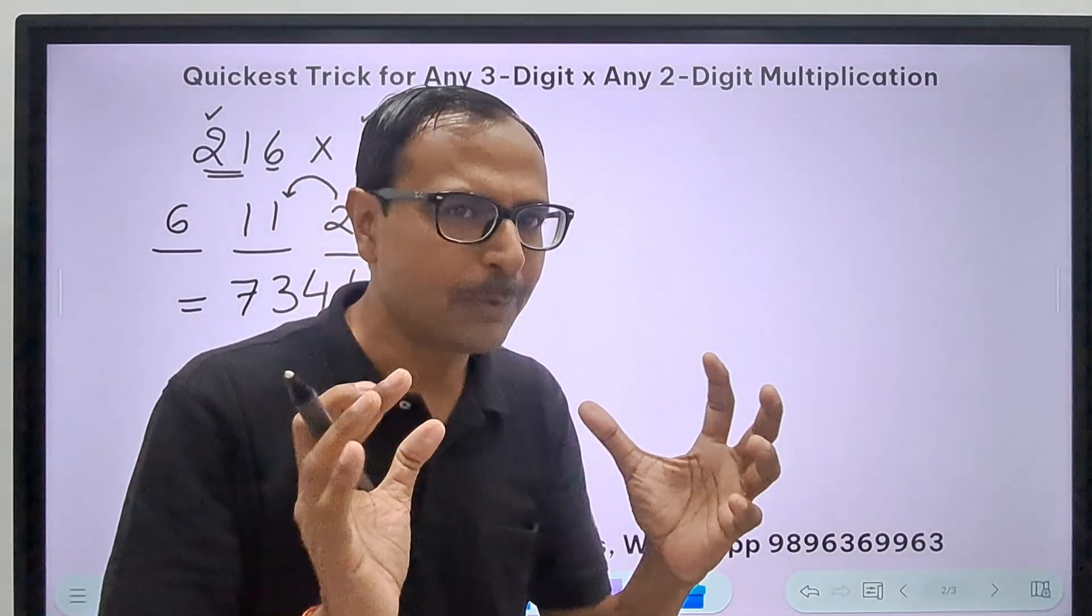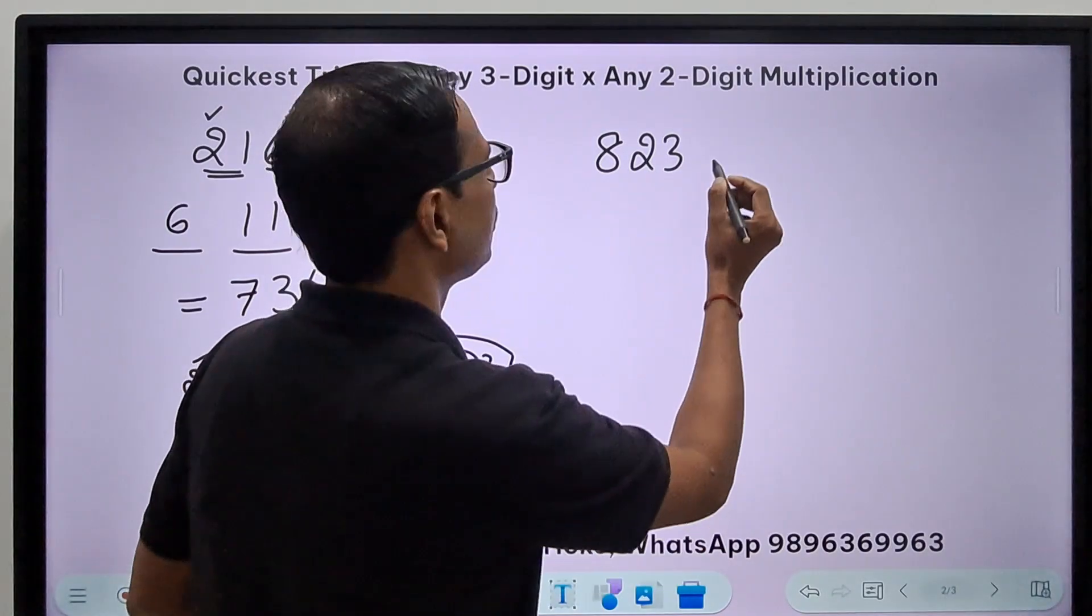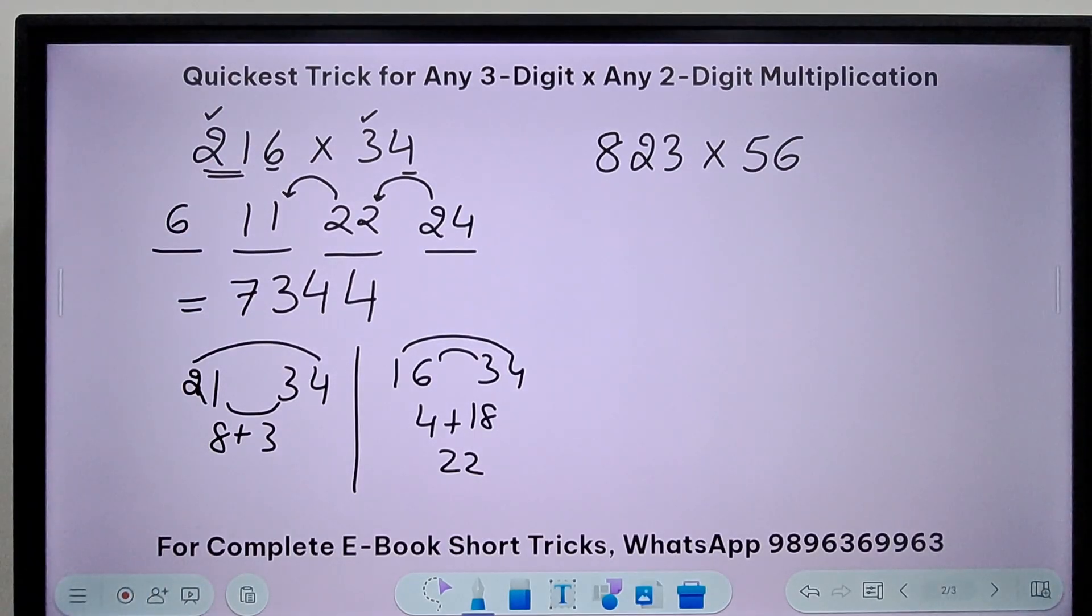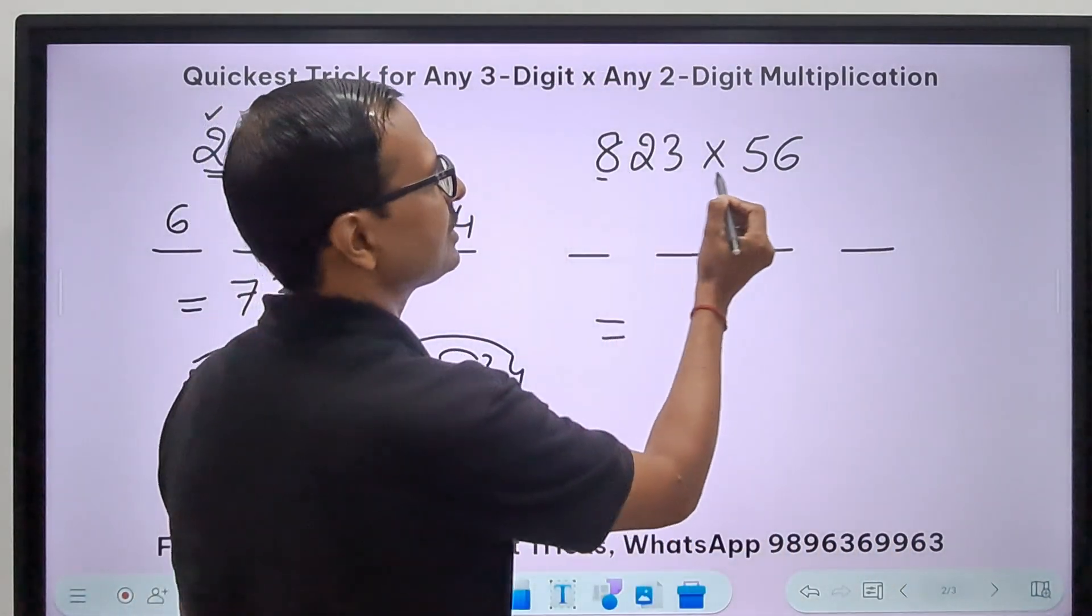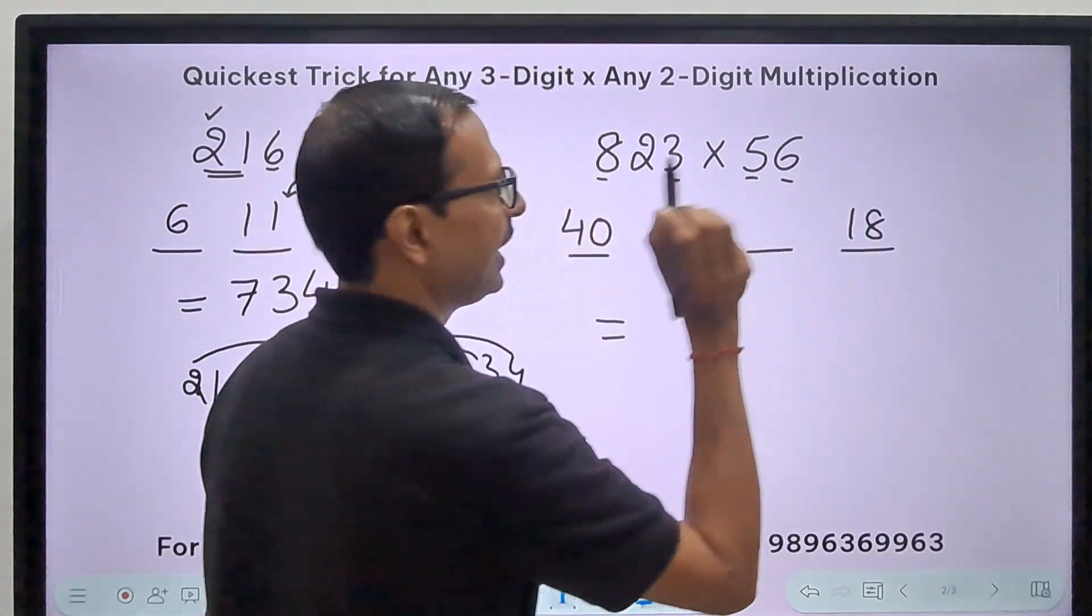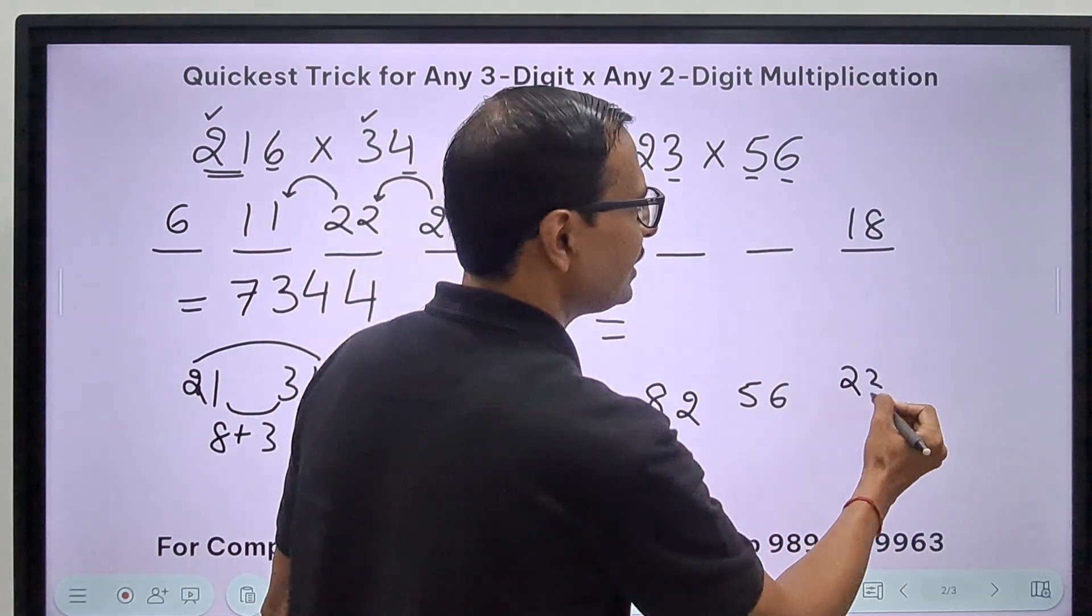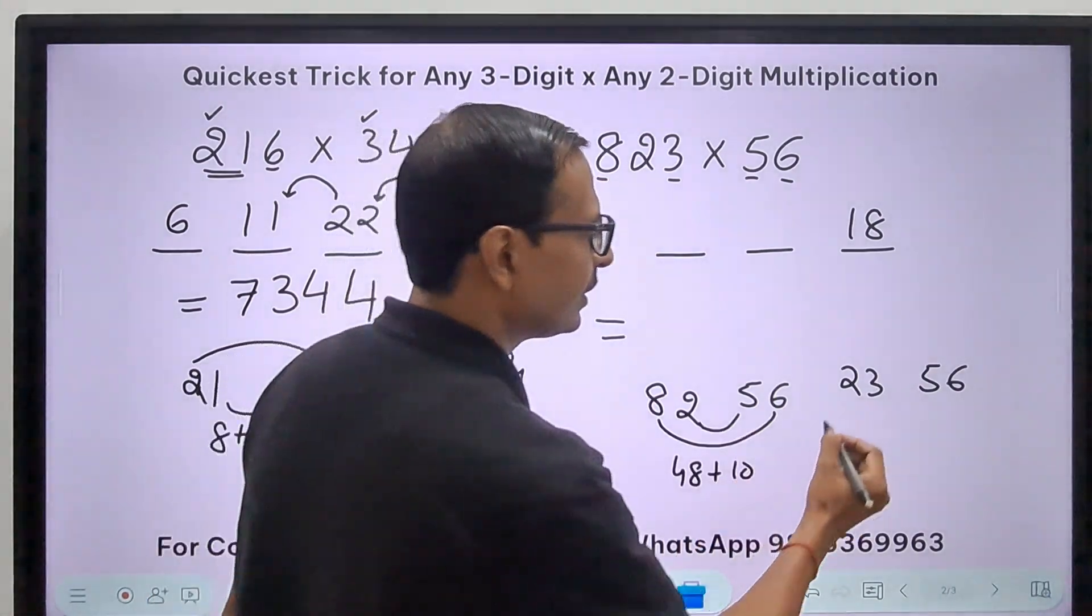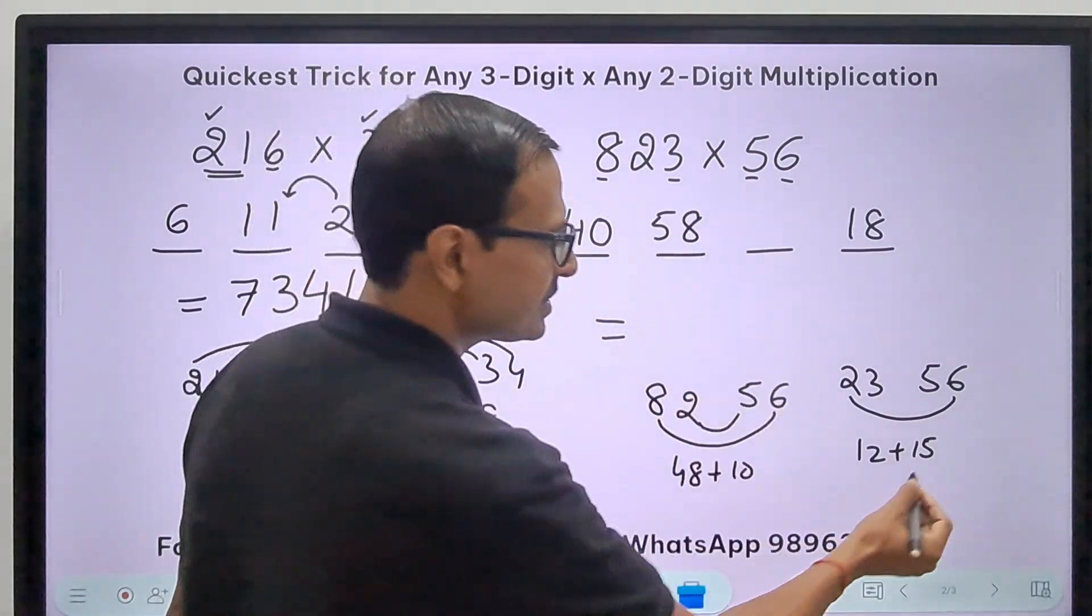We are going to build up on this. Let's see another one. 823 times 56. Let's write the four numbers. First digit, first digit is 40. Last digit, last digit is 18. And now 82, the first two digits with 56, and 23 with 56. So this is going to be 8 times 6 is 48 plus 5 times 2 is 10.